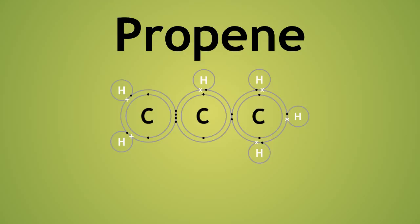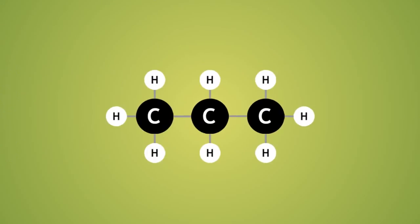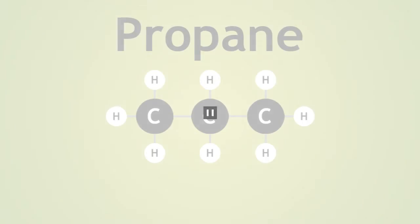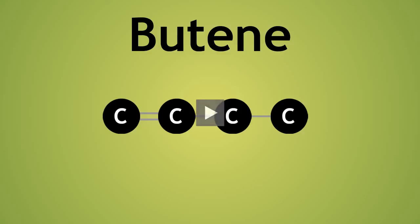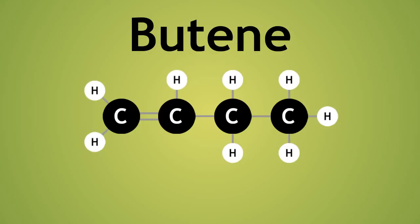Since we now understand the covalent bonding in these molecules, let us replace the dot-cross diagram with the structural formula. Here is the structural formula of propane. Pause the video now and try to complete this structural formula of butene. Here is the completed structure. Did you get it right?